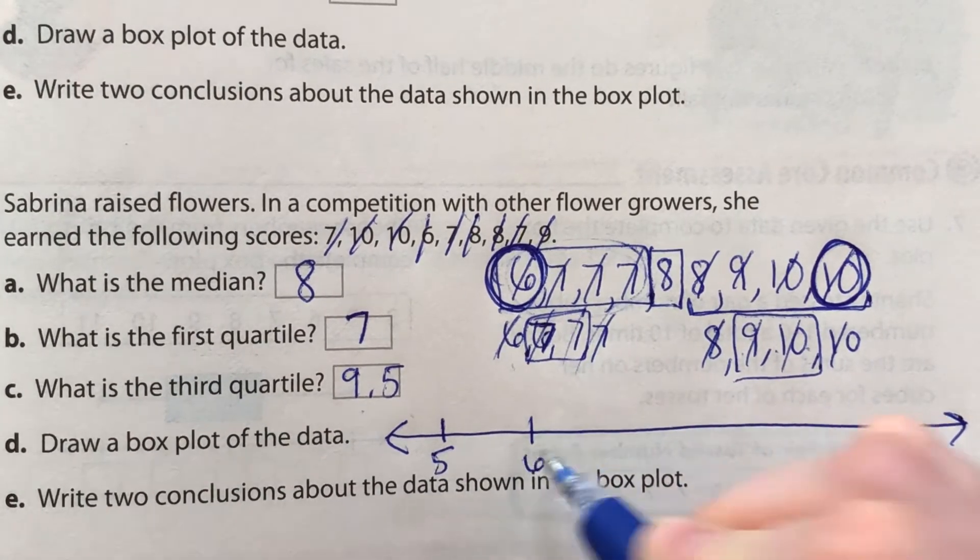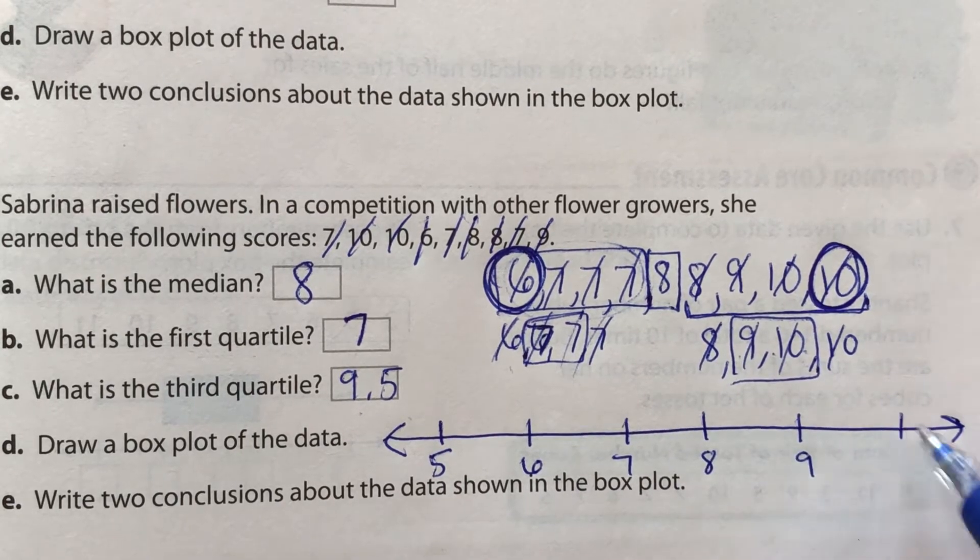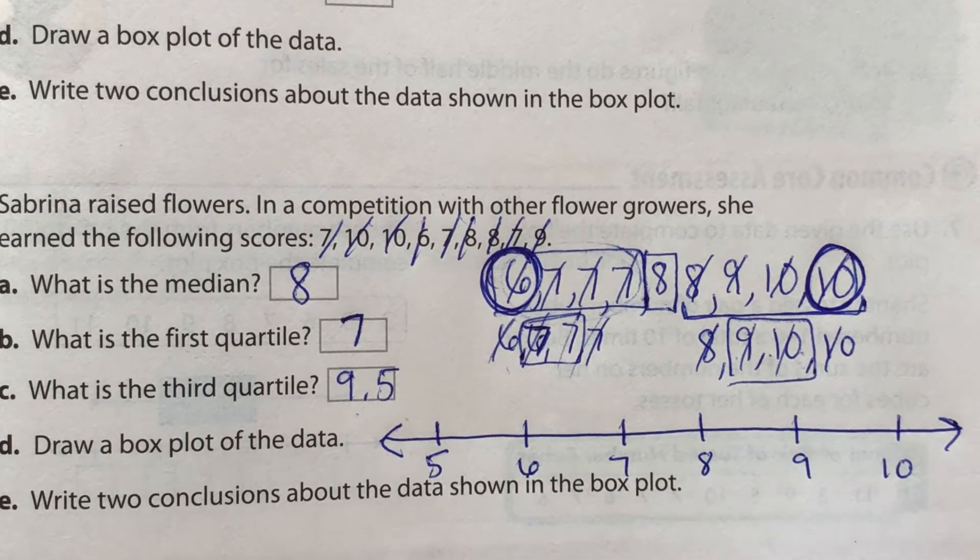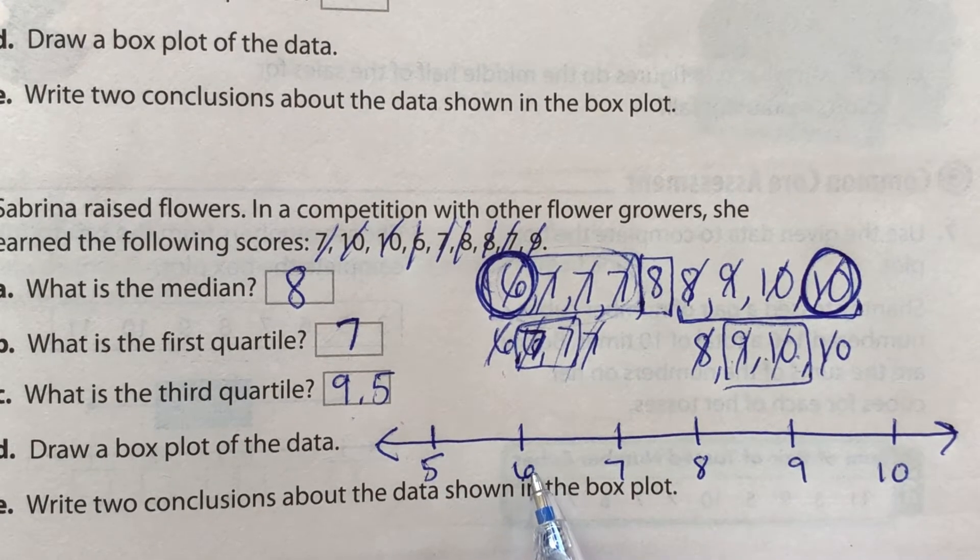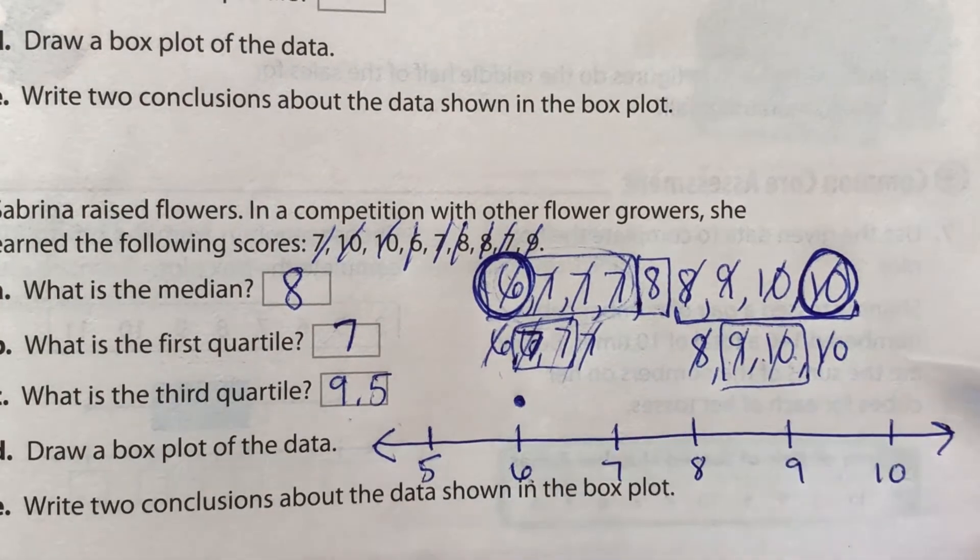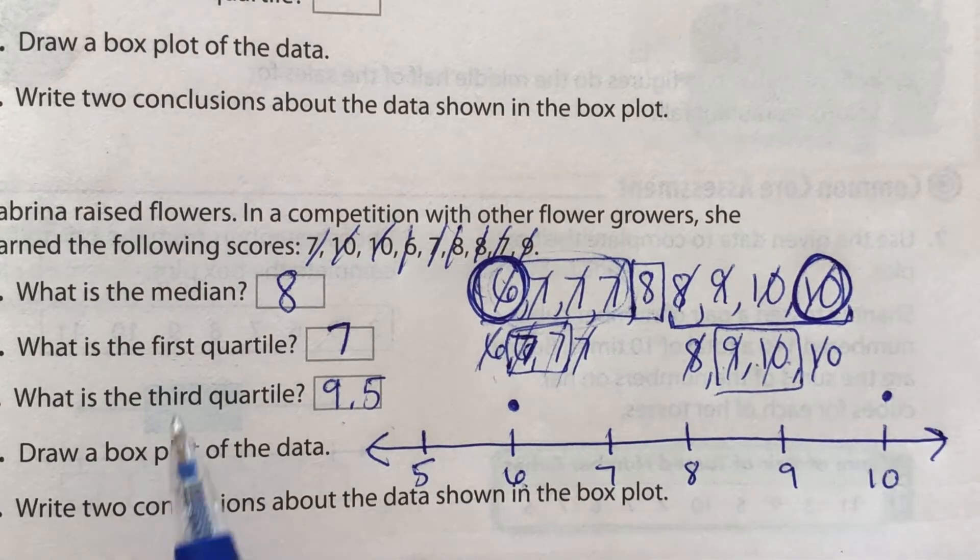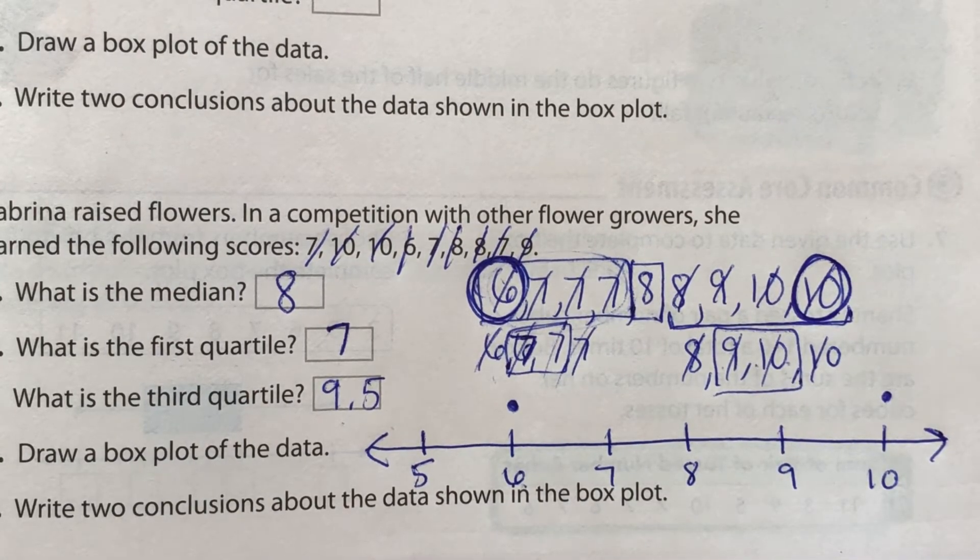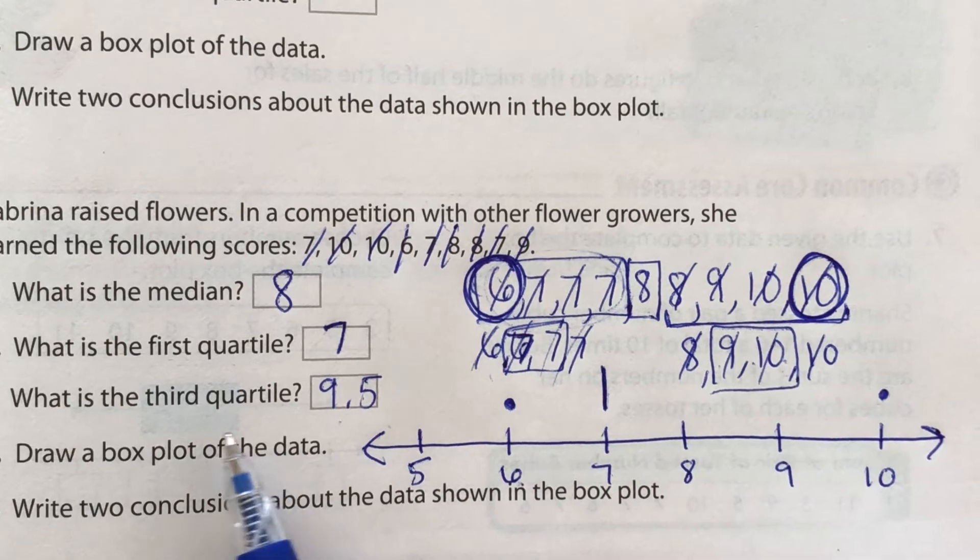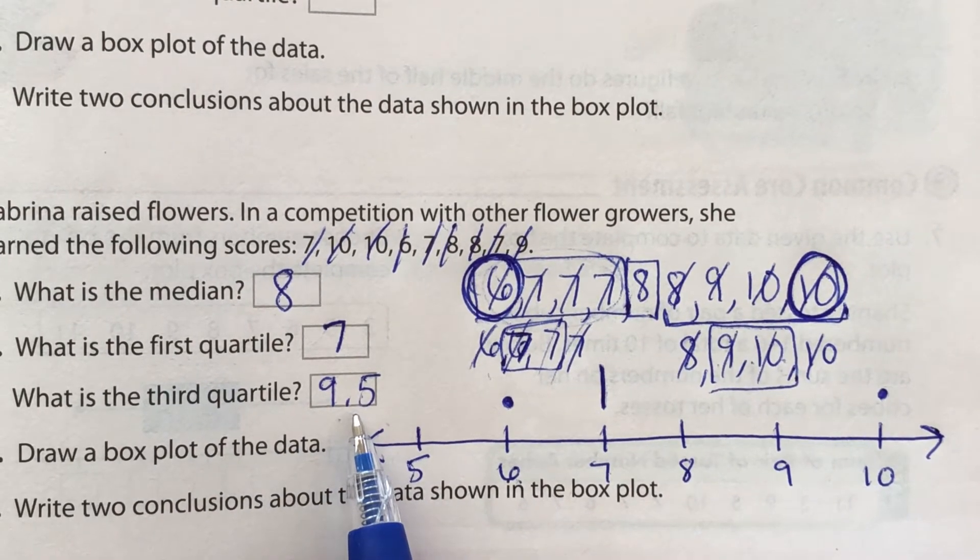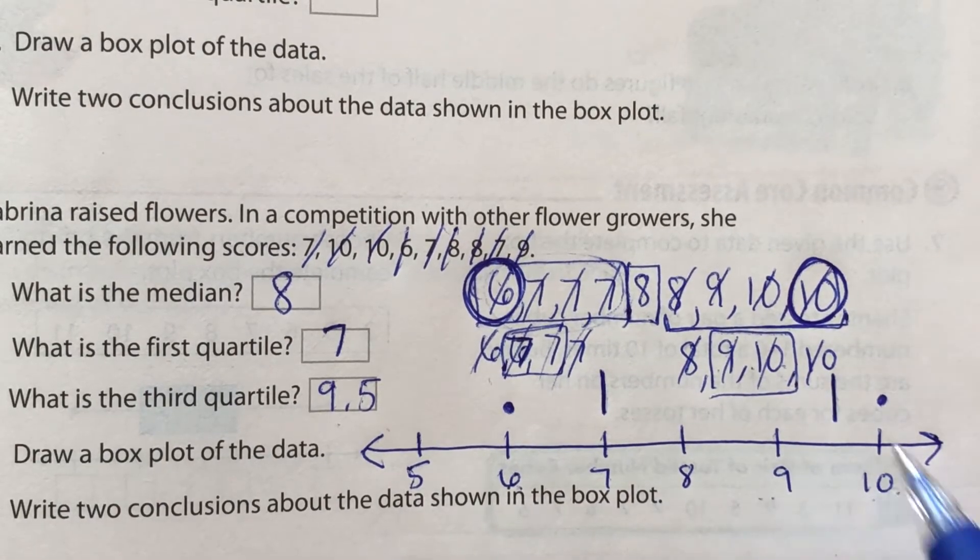So I'll start at the number five. Five, six, seven, eight, nine, 10. So we put a dot right above where our minimum is, which is six. We put a dot right above where our maximum is right here. Our first quartile is where our box starts. So our box starts at seven. Third quartile is where our box ends. So our box ends at nine and a half right here between nine and 10.